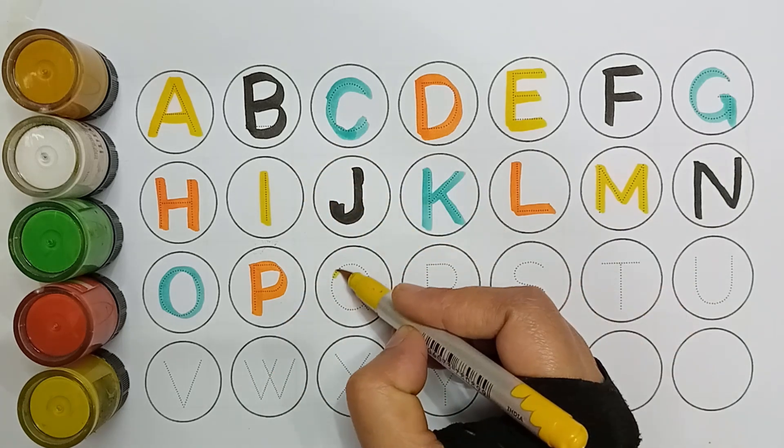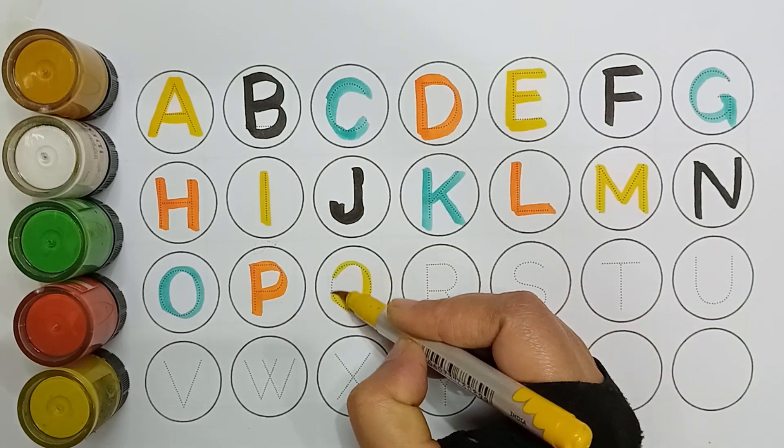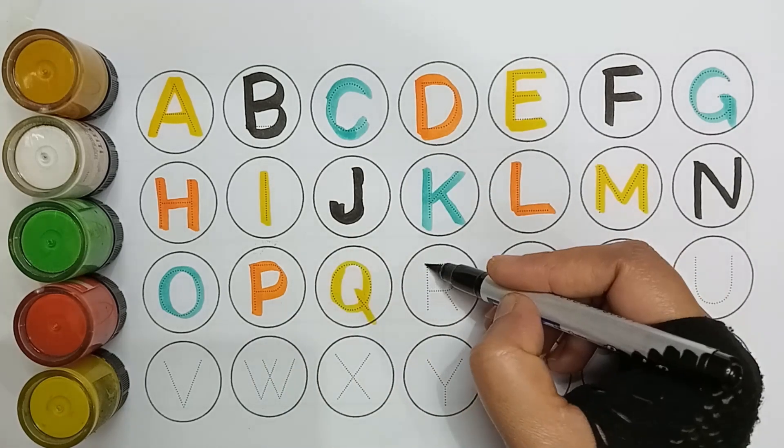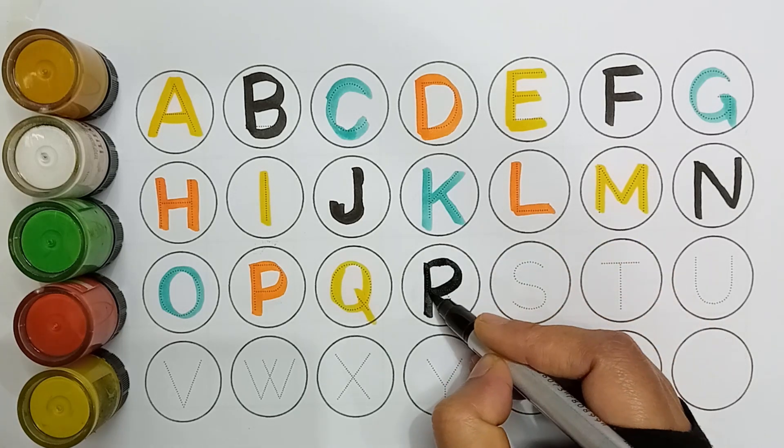Yellow color, Q, Q for queen. Black color, R, R for rabbit.